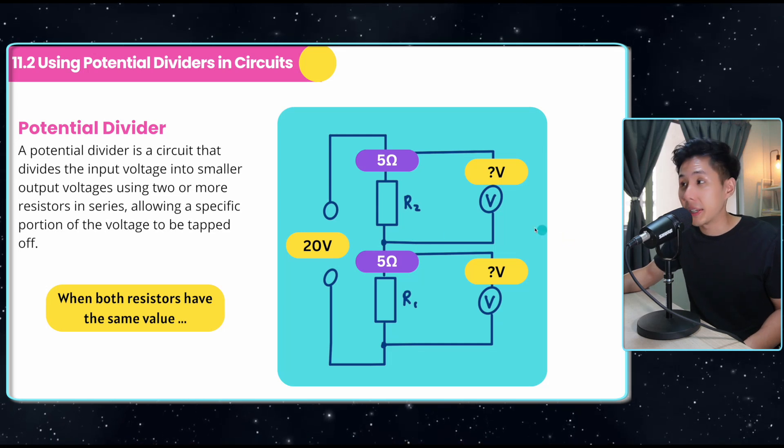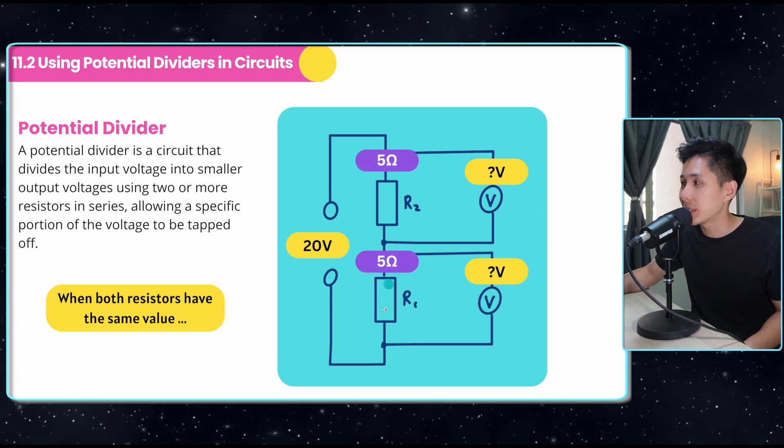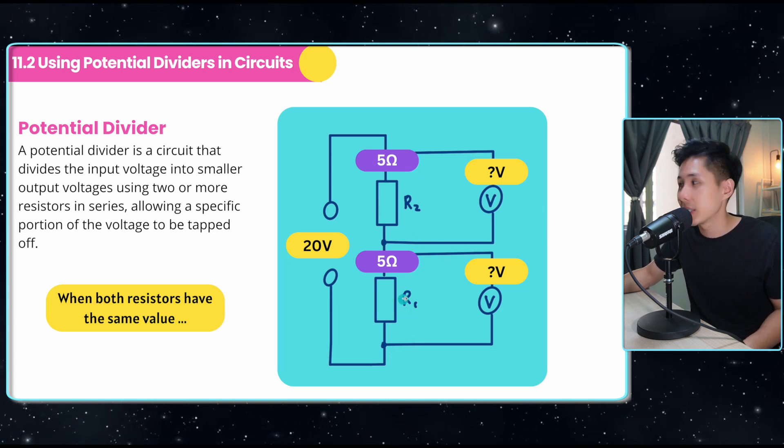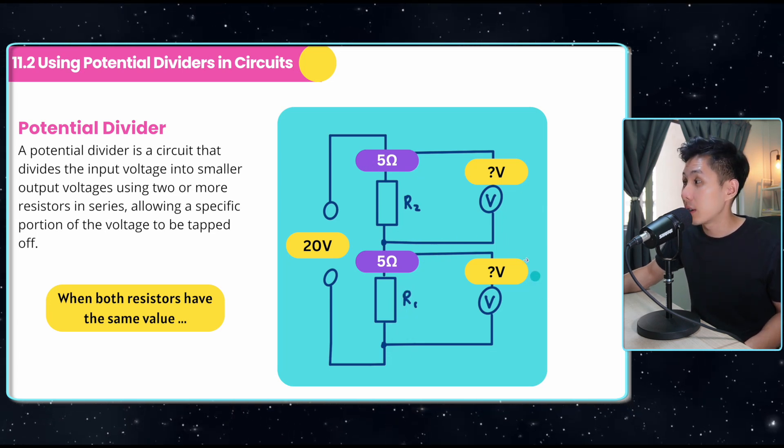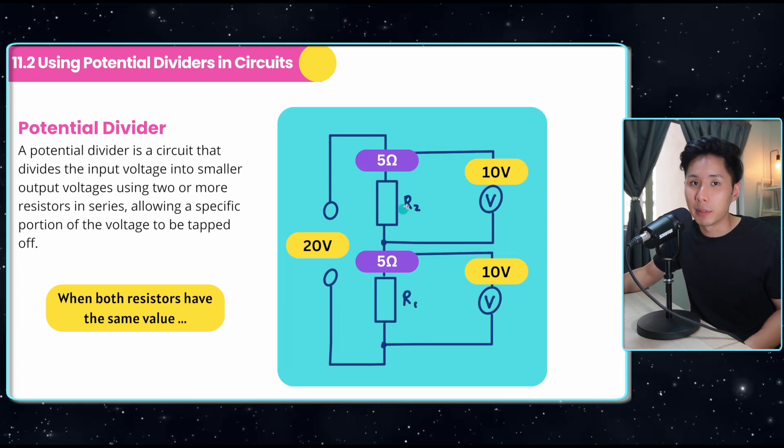Now let's look into one worked example to help you understand better. Say I have a potential divider, and I have two resistors of the same resistance. Guess what the voltage here will be? You might have already gotten the answer, which is 10 volts, because the resistance is the same.